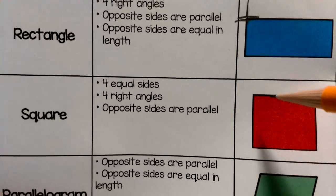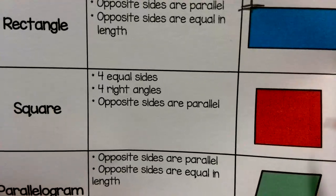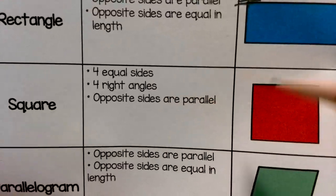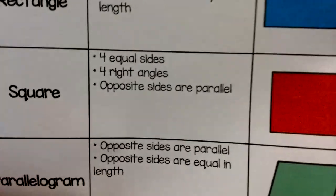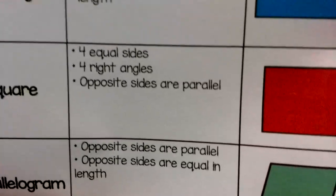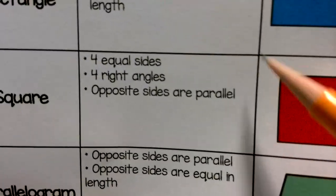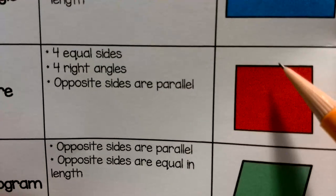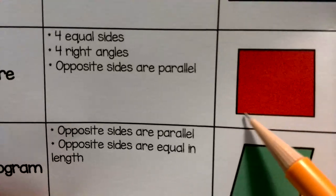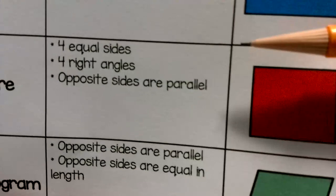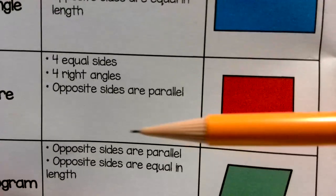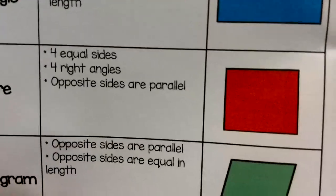The next quadrilateral is a square. This square — we've already talked about in class — has all sides that are equal length, so it says four equal sides. It also has four right angles, so if you took your piece of paper and put it in that corner it would fit perfectly. And then all the opposite sides are parallel, meaning those lines will forever run without touching each other — they will never intersect or cross.